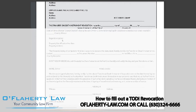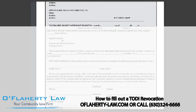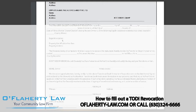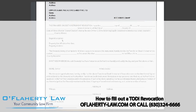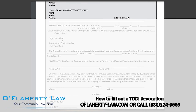You will need the legal description of the property, which can be found by going to the office of your county recorder of deeds or by searching for your deed on their website. You should have the legal description on your TODI already, but if you do not have a copy of that, you are able to look that up online.